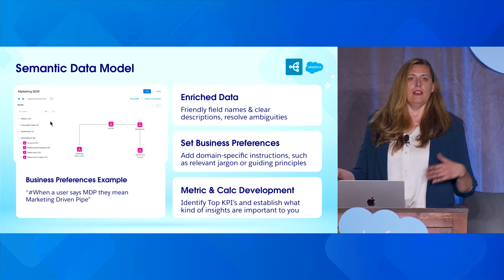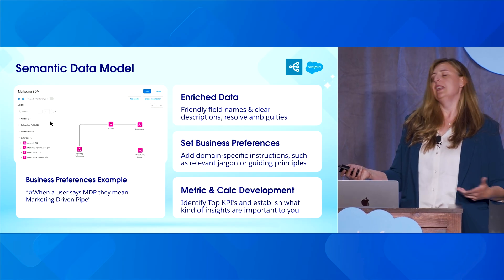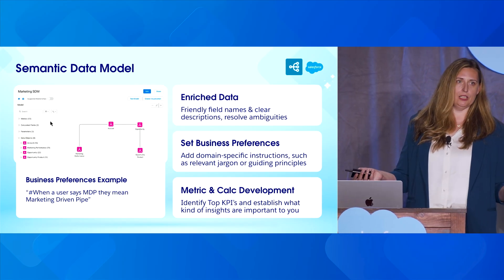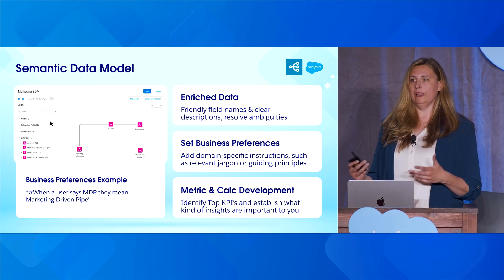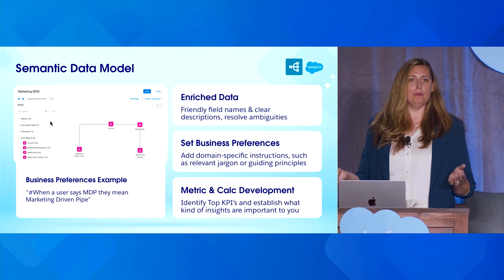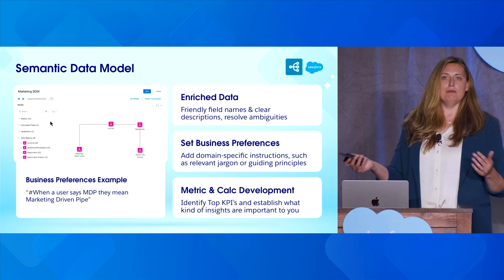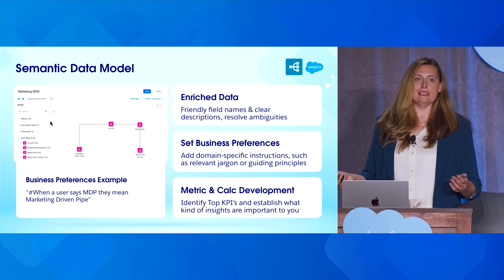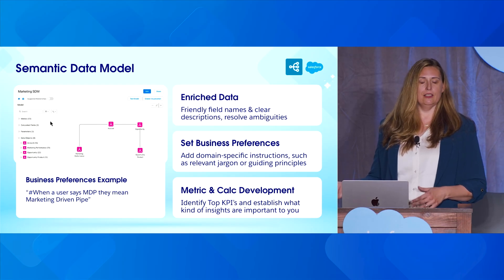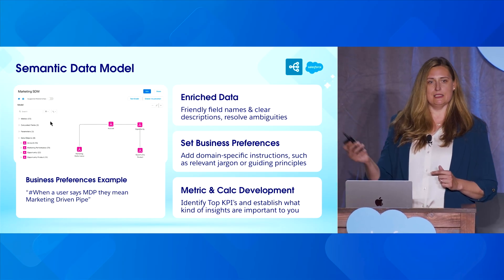You need to enrich your data — that means cleaning up the raw data fields. As an engineer, we use a lot of abbreviations to identify fields that don't make sense to our marketers. So I go through and clean up field names and add descriptions. We also need to add business preferences — rules or logic. For example, MDP stands for marketing-driven pipe amount. When someone types that into a concierge question, they need to know they're getting the marketing-driven pipe amount number. That's a business preference we've written in.